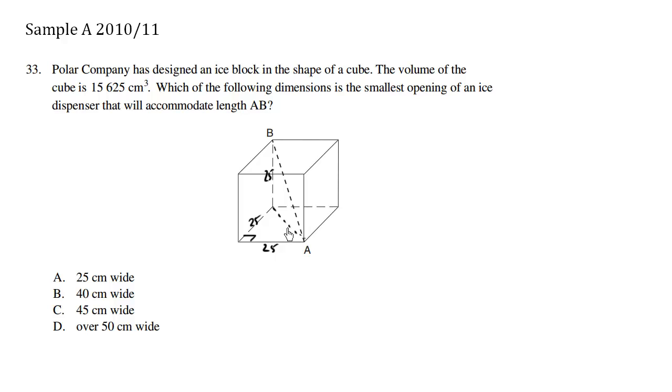The hypotenuse I'll call C. We know that the Pythagorean theorem states that C squared equals A squared plus B squared, which is 25 squared plus 25 squared. So C equals the square root of 25 squared plus 25 squared.